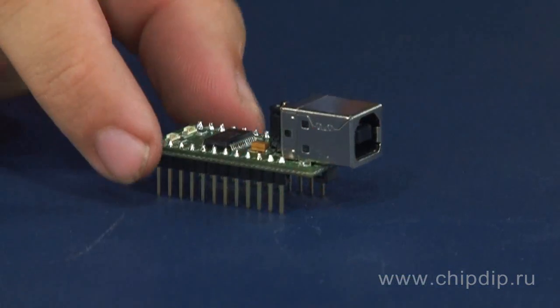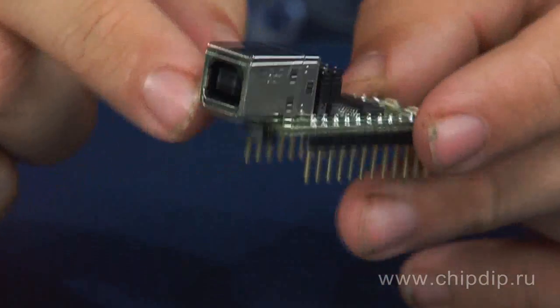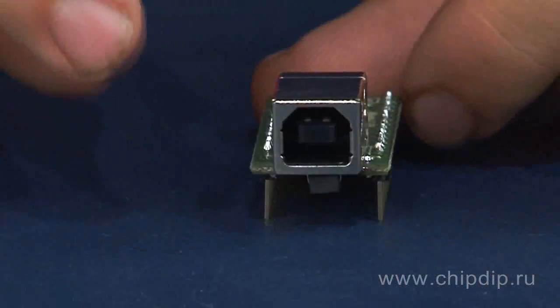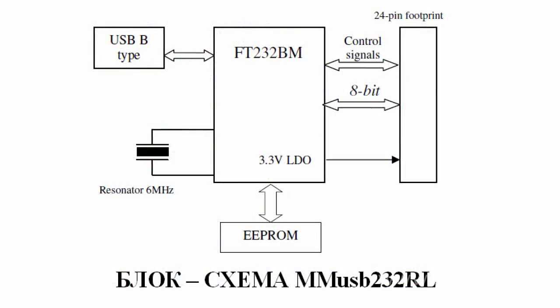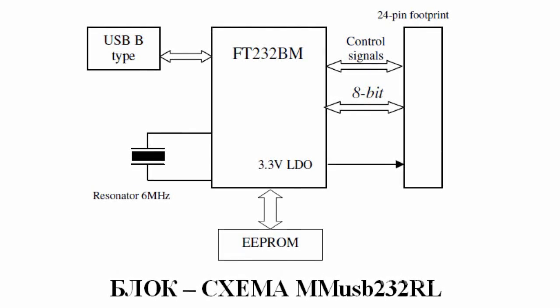One of the devices based on this circuit is the MMUSB232RL produced by the company Propox. This is a USB 2.0 UART adapter based on the FT232RL microcircuit for embedded systems. The data transmission rate is 1 Mbps in RS232 emulation mode and 3 Mbps in RS422/RS485 mode. This device is a simple and inexpensive solution for designing embedded systems, especially when time is one of the most important factors.